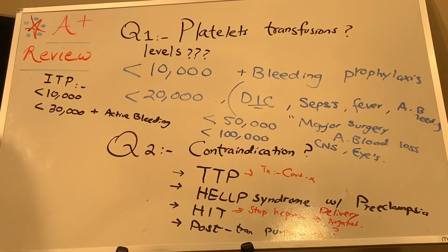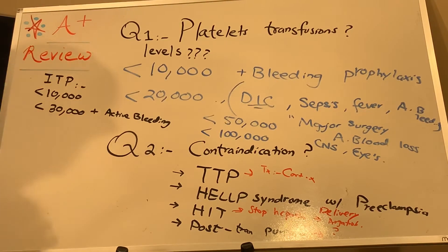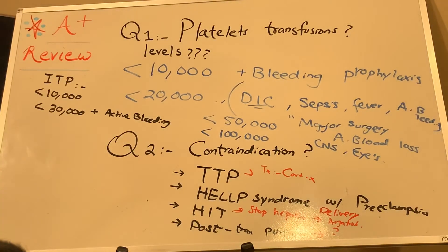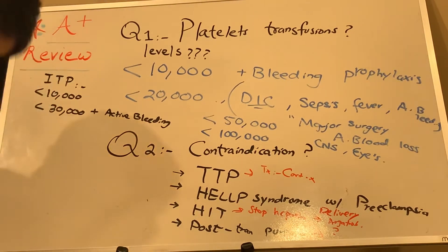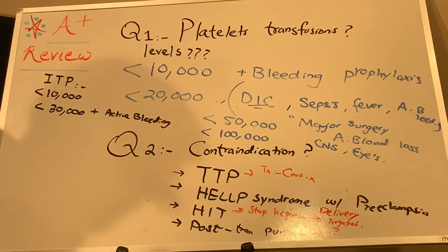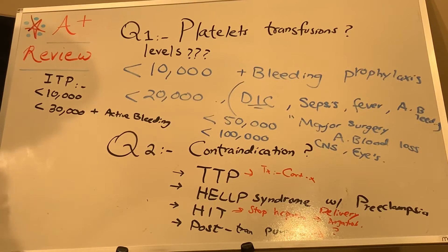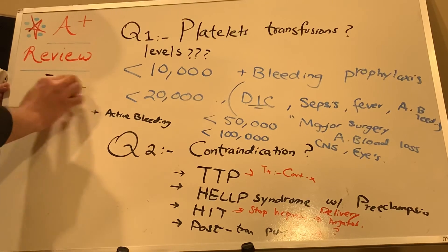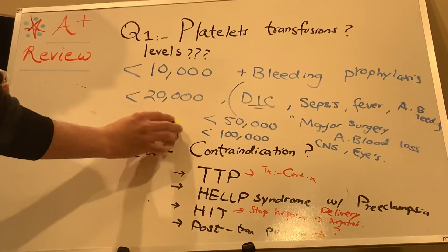One last point: when can we give platelets within the normal range? We can consider it in patients with platelet dysfunction or on antiplatelet drugs or agents who have active hemorrhage. In those cases, you can give platelet transfusion in the normal range. Other than that, follow these levels. The goal of platelet transfusion is to decrease the risk of bleeding, and about one unit of platelets should increase the platelet count by approximately 50,000.